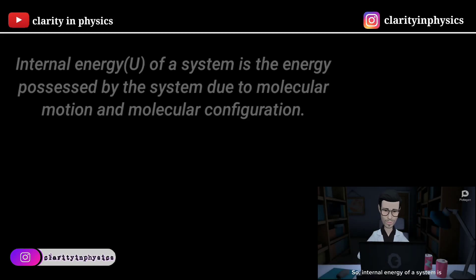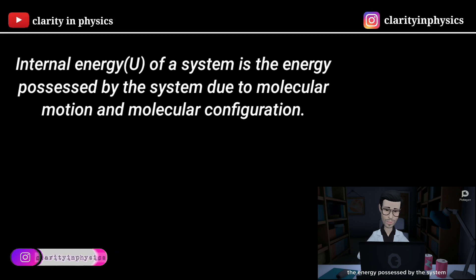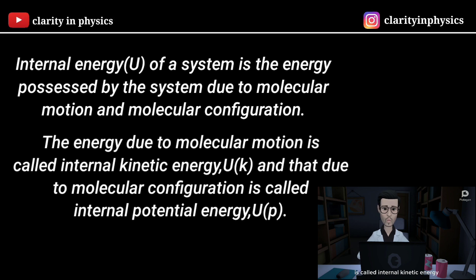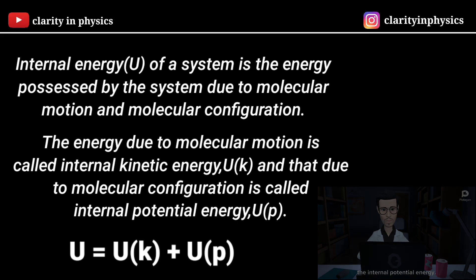Let's talk about internal energy. Internal energy of a system is the energy possessed by the system due to molecular motion and molecular configuration. The energy due to molecular motion is called internal kinetic energy and that due to molecular configuration is called internal potential energy. Internal energy is simply the sum of the internal kinetic energy and the internal potential energy.